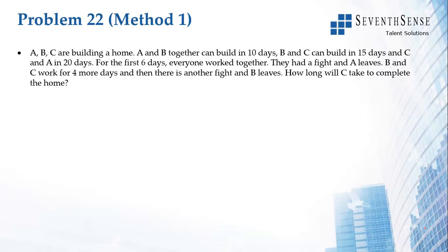Let us look at this question. A, B, and C are building a home. A and B together can build it in 10 days, B and C in 15 days, and C and A in 20 days. For the first 6 days everyone works together, then they had a fight and A leaves. Then B and C work for 4 more days, and then there is another fight and B leaves.